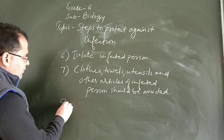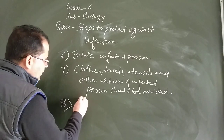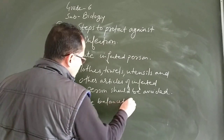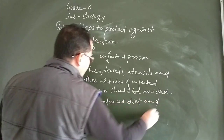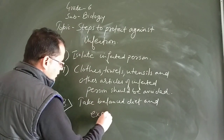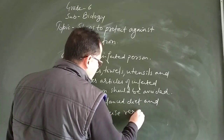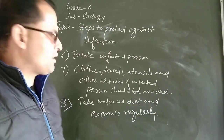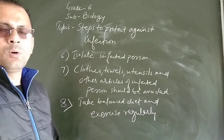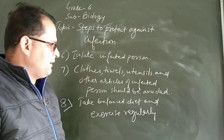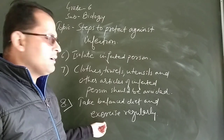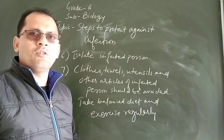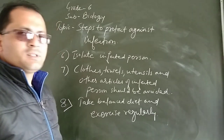The most important thing is to take a balanced diet and exercise regularly. When you take a balanced diet, you get all the essential nutrients required for the proper growth and development of the body. Regular exercise keeps blood circulation healthy and makes your muscles strong.